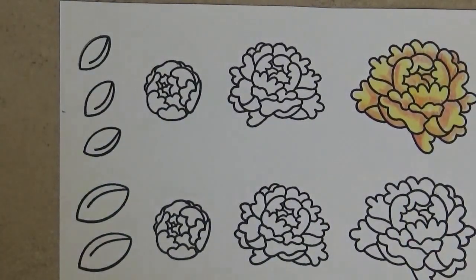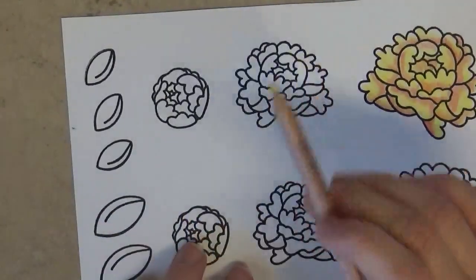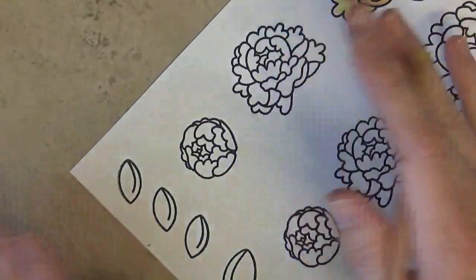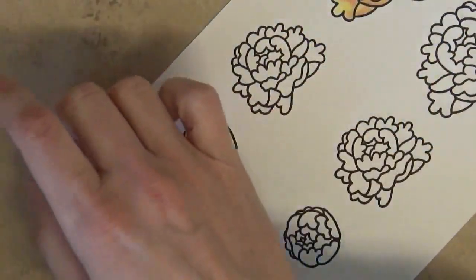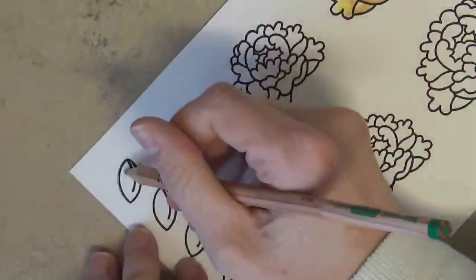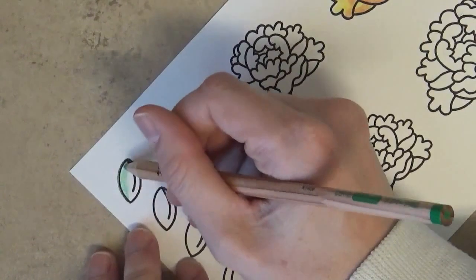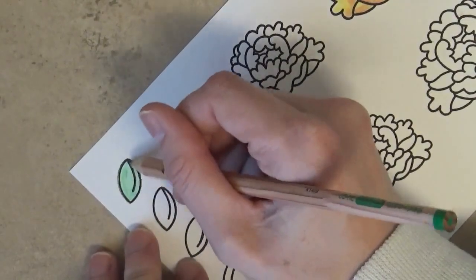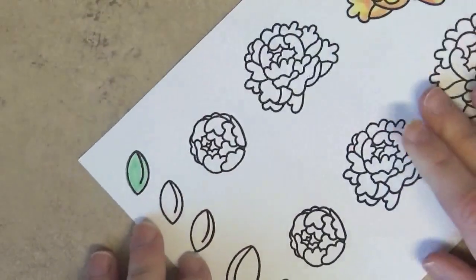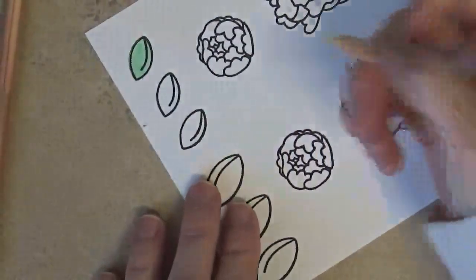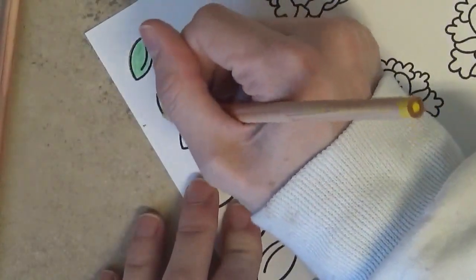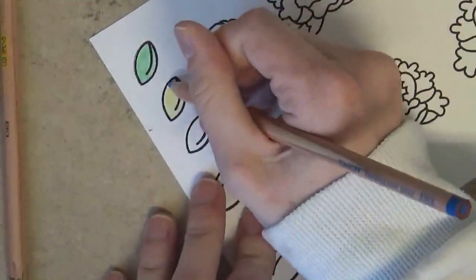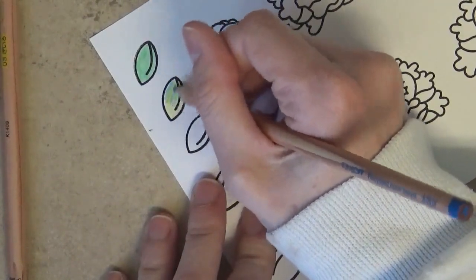I did also want to show you another thing that you can do with these pencils since they're really easy to blend. You can sort of add a few colors together to make a new color. So they do have a green that I got in this pack. So you can color your leaves really simply with the green. But if you kind of wanted to change the shade or blend your own green, you can take yellow. Put down some yellow and then of course yellow and blue make green. So, just go over your yellow with some blue.